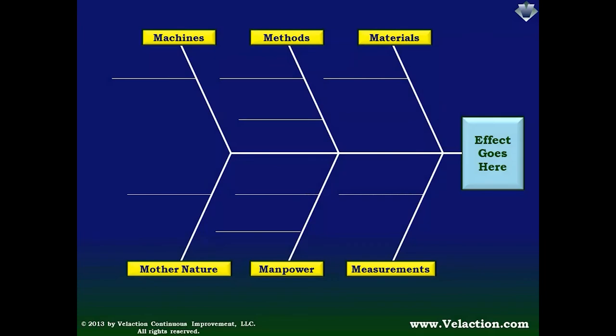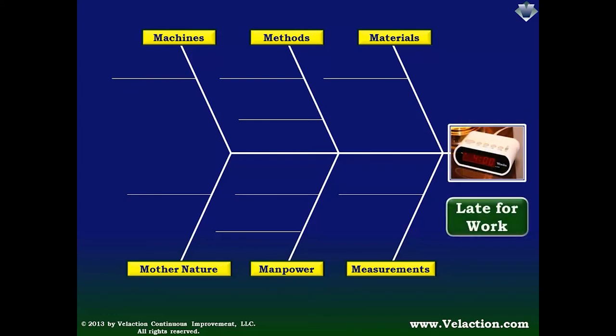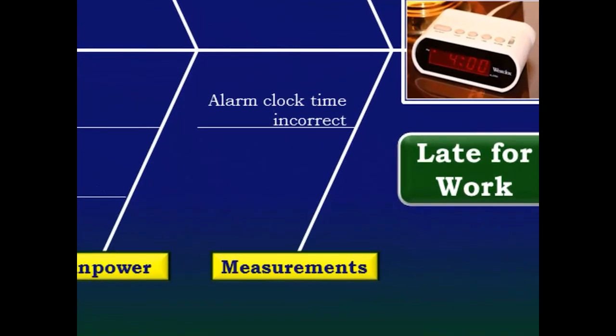Now that you're armed with a better understanding of Fishbone Diagrams, let's walk you through an example. Now what I've found over the years is that if I use work-related examples, people either tune out if they don't think it's relevant to them, or if it is a relevant example, they tend to focus on how it doesn't match exactly. So instead, let's focus on something that we can all relate to, getting to work on time. One of the possible issues that caused me to be late to work is that my alarm clock might have been set wrong. And that seems like something that would fall into the Measurements category.